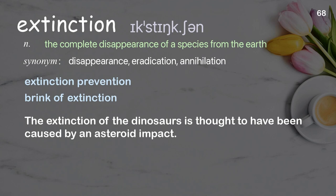Extinction: the disappearance of a species from the earth. Examples: extinction prevention; brink of extinction. The extinction of the dinosaurs is thought to have been caused by an asteroid impact.